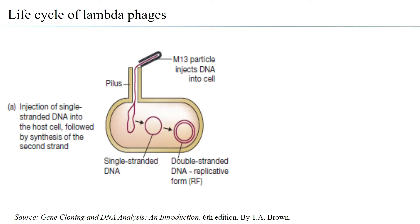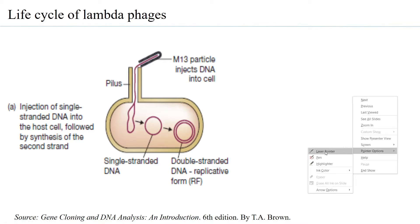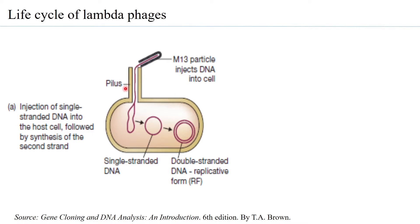The M13, which is a filamentous bacteriophage, has a linear DNA as its genome. The M13 particle is able to attach itself to the pilus, which are specialized structures present on the host bacteria. The pilus is generally used for conjugation purposes and can range from very short to very long. The M13 particle uses this pilus structure for attachment and then injecting the DNA into the bacterial host. Once inside the bacterial host, the linear DNA gets circularized to form a single-stranded DNA.